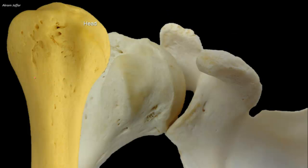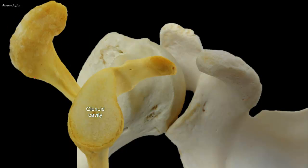The head forms about one-third of a sphere, and its area is much larger than that of the glenoid cavity of the scapula with which it articulates. The glenoid cavity is shallow, concave and oval. There is a marked disproportion between the large head of the humerus, the bowl, and the small shallow glenoid fossa, the socket, which only accepts about one-third of the humeral head. The shoulder joint is therefore very mobile, but easily dislocated.